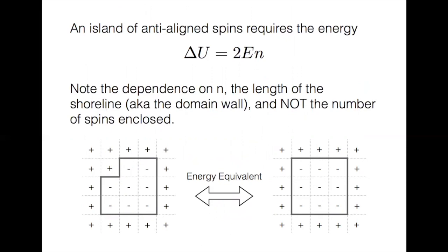If we have an island of anti-aligned spins, we must have an increase in energy of 2en. Now the 2e comes from the fact that we are flipping a spin, and the energy to flip is e minus a negative e, or 2e. And that is times the number of flipped spins, which are the boundary spins, precisely the length of the shoreline. It is important to note that the dependence is on n, the length of the shoreline, or the domain wall, and not the number of spins enclosed.